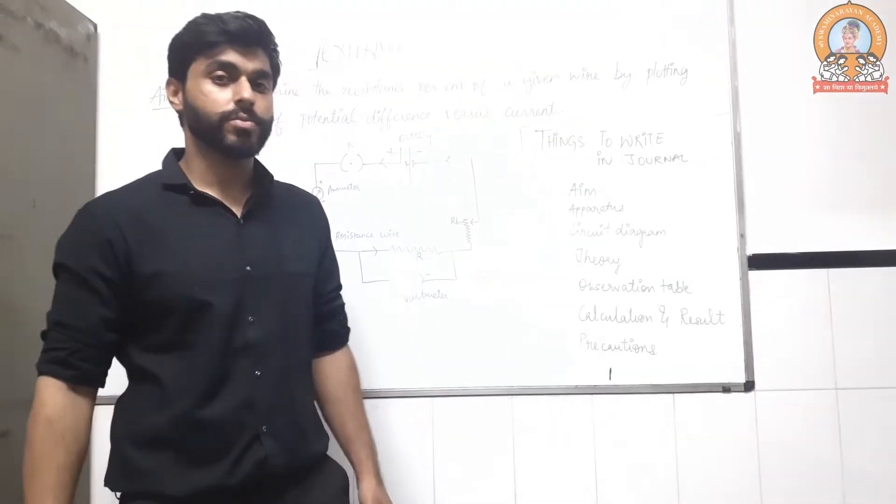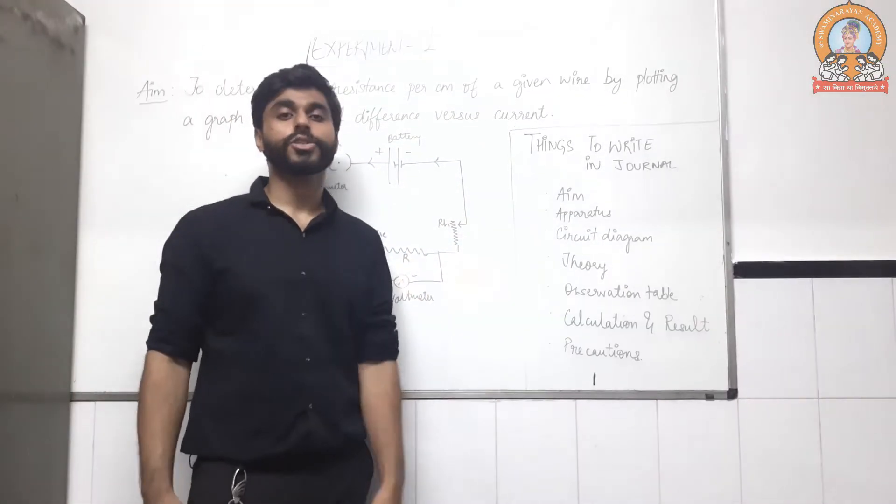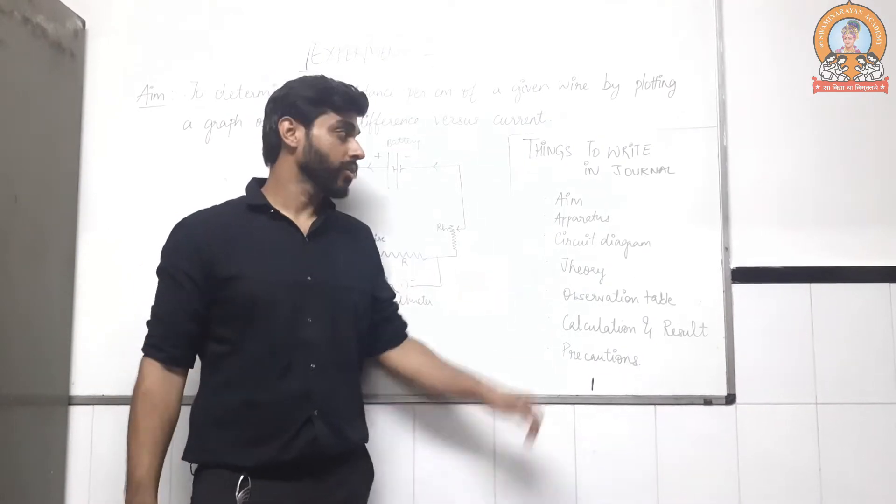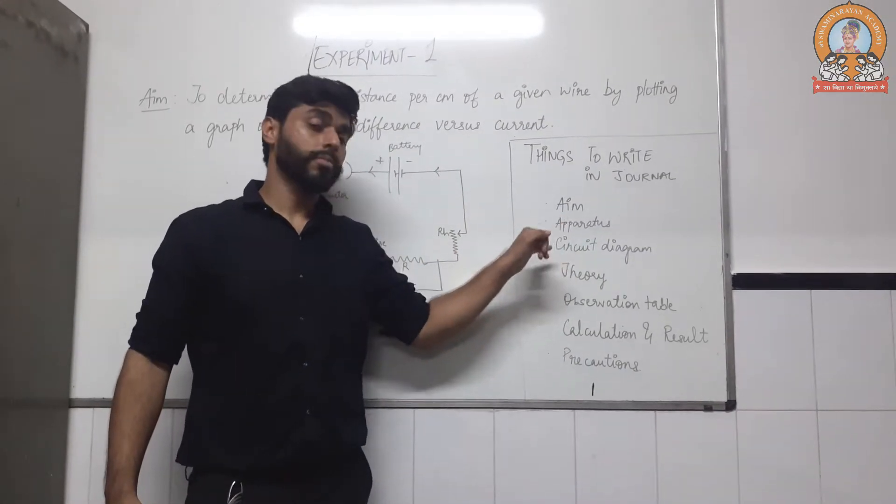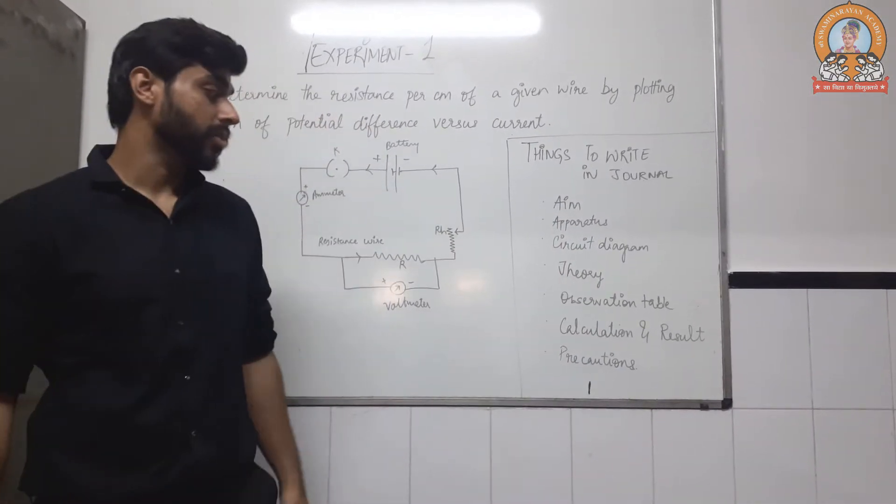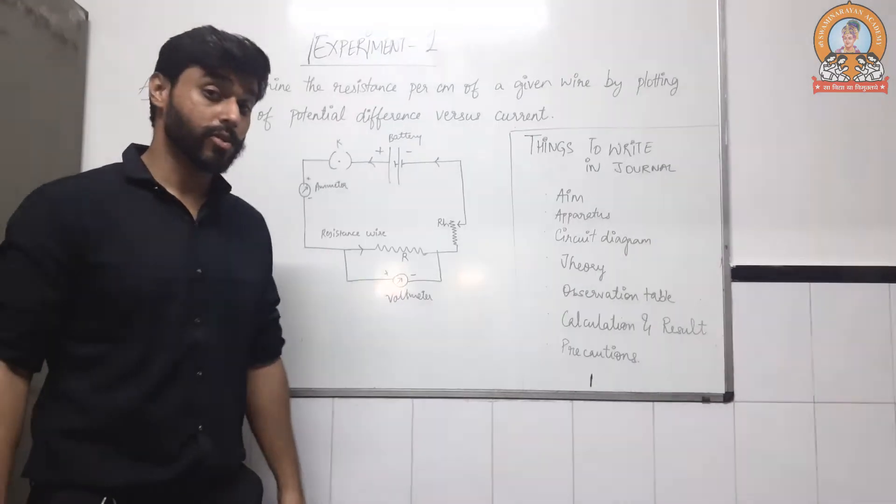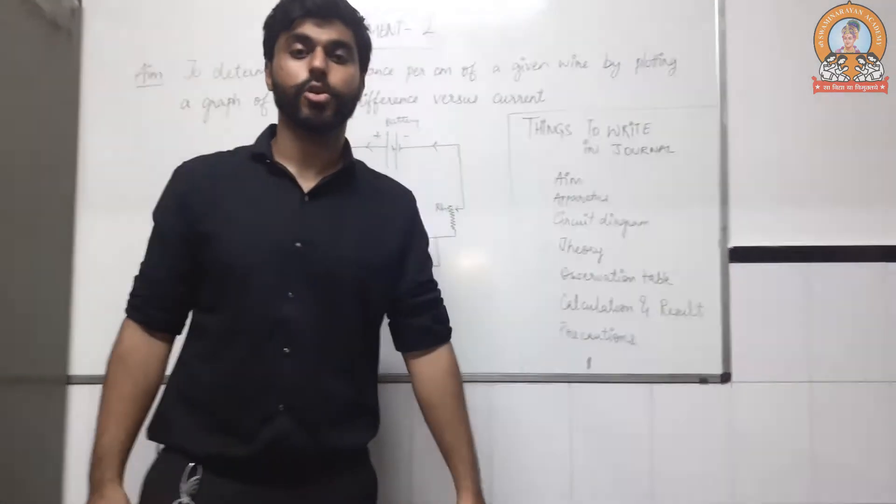Before moving towards the observation table, first keep in mind in each of every experiment we are performing, you need to write all these things: Aim, apparatus, circuit diagram, theory, observation table, calculation and result, and then at last precautions.